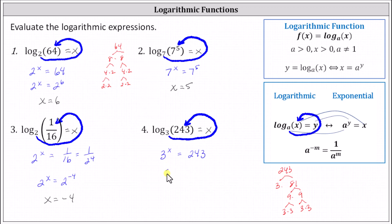If three to the x equals three to the fifth, x equals five, indicating log base three of 243 equals five, because three to the fifth equals 243. I hope you found this helpful.